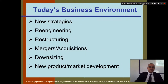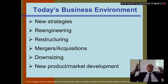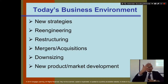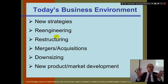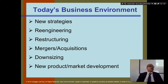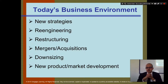Today's business environment has lots of new strategies requiring decisions. You might want to do re-engineering — rearranging accounting, sales, closing or opening branches, changing products, services, or processes. Restructuring involves changes to the organizational chart — adding or removing departments. A merger means merging with or buying a competitor. Downsizing means firing people. There is also new product and market development when moving into new products or markets.